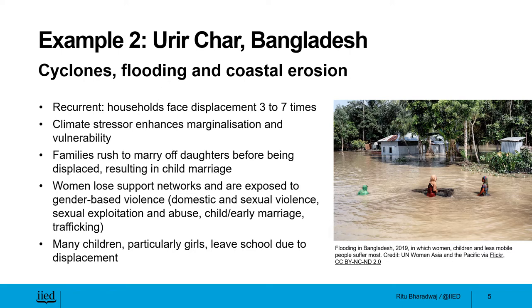The second case study is from Uralchar in Bangladesh, a river island that has been exposed to cyclones and flooding in the past. But in recent times, because of climate change, the frequency and intensity of these cyclones have increased, resulting in more frequent floods, coastal erosion, and sea level rise. Every household here has faced displacement at least three to seven times, meaning that even before they are able to recover from one climate impact, they are faced with another — compounding their marginalization and vulnerability. Families who see their land eroding rush to marry off their daughters before they are displaced, often resulting in child marriages.